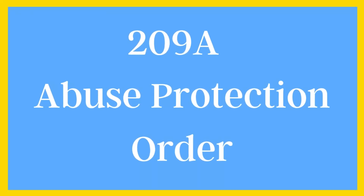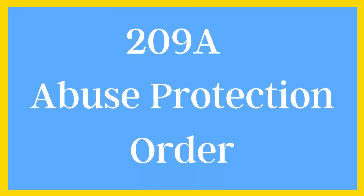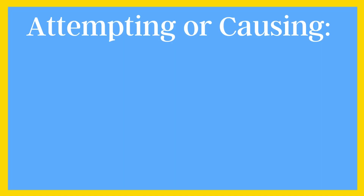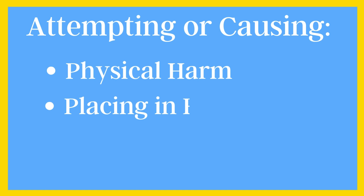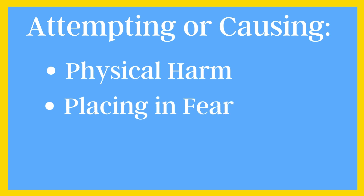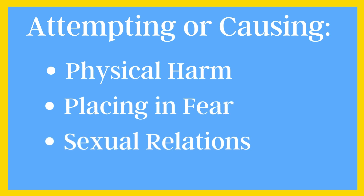First, let's talk about the 209A Abuse Protection Order. This order is designed specifically to protect individuals from abuse by a family or household member. Abuse here is defined as attempting to cause or causing physical harm, placing another in fear of imminent serious physical harm, or causing another to engage in involuntary sexual relations by force, threat, or duress.